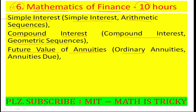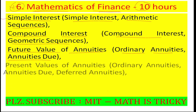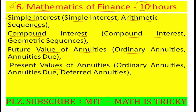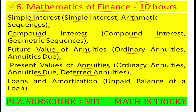We also cover future value of annuities — ordinary annuities and annuities due — as well as present values of annuities, ordinary annuities, annuities due, and various annuity types. Finally, we cover loan amortization and the unpaid balance of a loan. That concludes chapter 6, mathematics of finance.